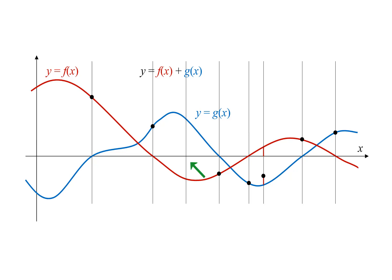Here's a value of x where f of x is negative. Again, we draw a red line segment to represent the value of f of x, but this time the segment goes down from the x-axis. To add this to g of x, we go down by this distance from g of x, which gives us another point on our graph.